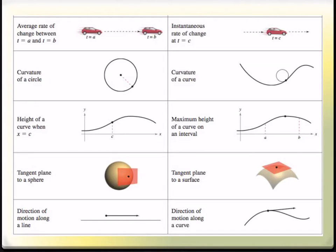With Pre-Calculus, you can find the tangent plane to a sphere. It's tangent just touching the sphere. But in Calculus, you can find the tangent plane to any surface. It doesn't have to be a sphere. With Pre-Calculus, you can find the direction of motion along a line. And in Calculus, you can do it along any curve.